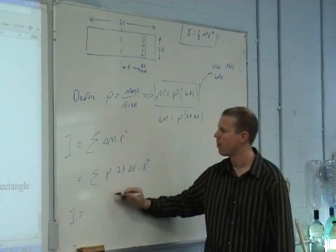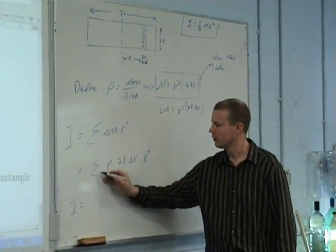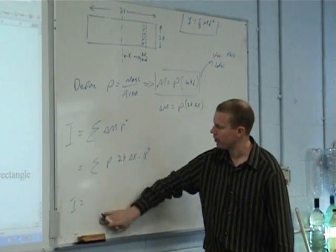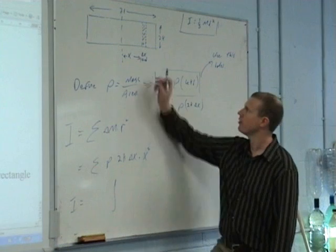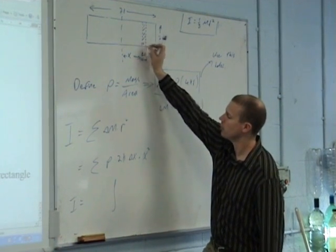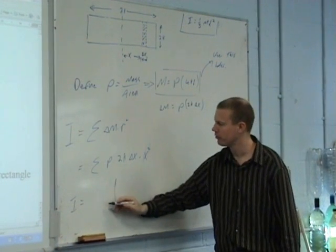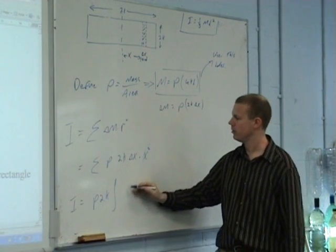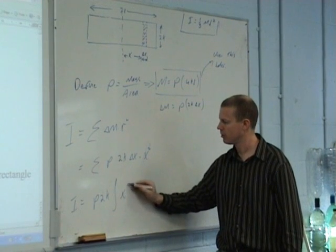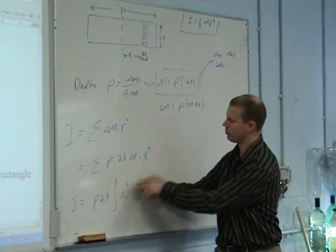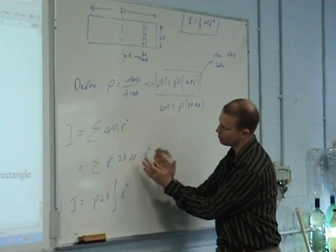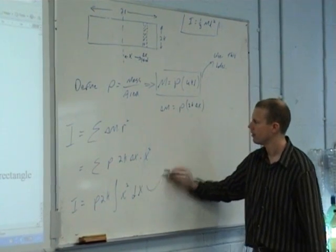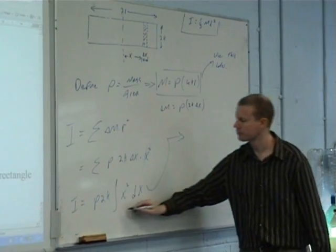That can become integral of rho 2K X squared dX. So instead of a sigma sign I put an integral. Basically means I'm making this width smaller and smaller and smaller. I take out my constants, which were rho 2K, and I'm left with X squared dX. X squared goes to X squared here, my delta X when I'm making smaller and smaller I replace that by a dX.